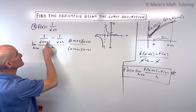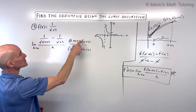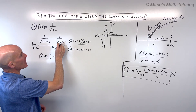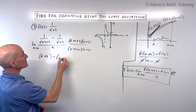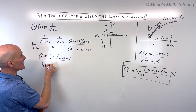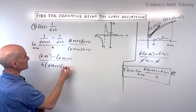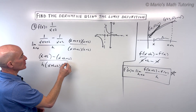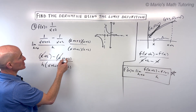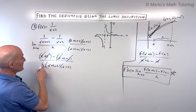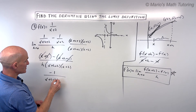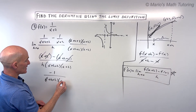If we distribute to the first fraction, the x plus h plus 2's cancel, leaving us with 1 times x plus 2. If we distribute to the second fraction, the x plus 2's cancel, leaving us with 1 times x plus h plus 2. In the denominator we're left with h times x plus h plus 2 times x plus 2. Now let's simplify: x minus x cancels, 2 minus 2 cancels, giving us a negative h divided by h, which reduces to negative 1 over x plus h plus 2 times x plus 2.